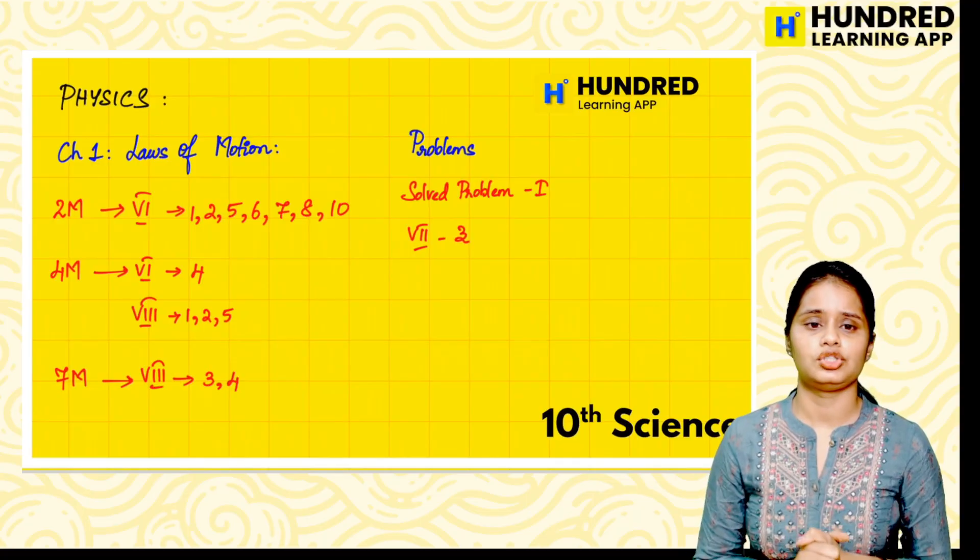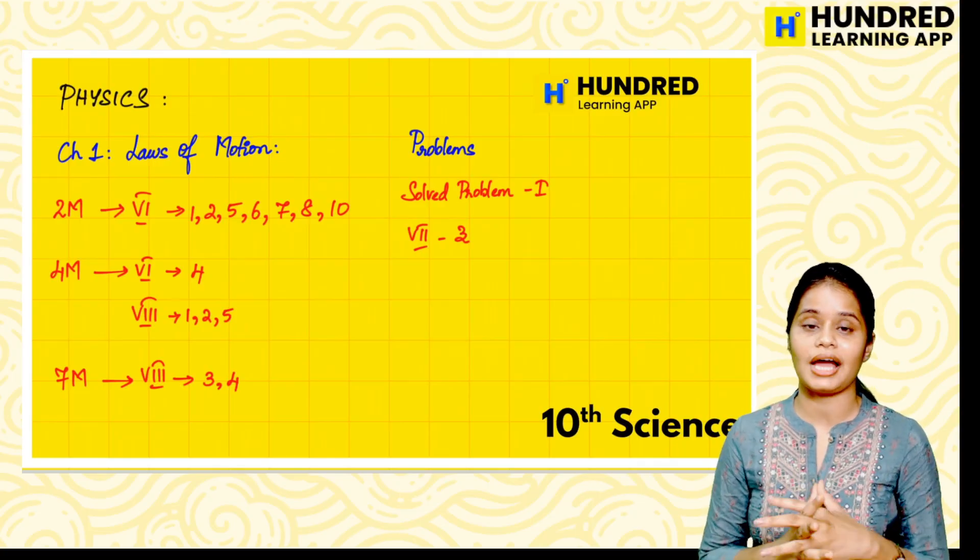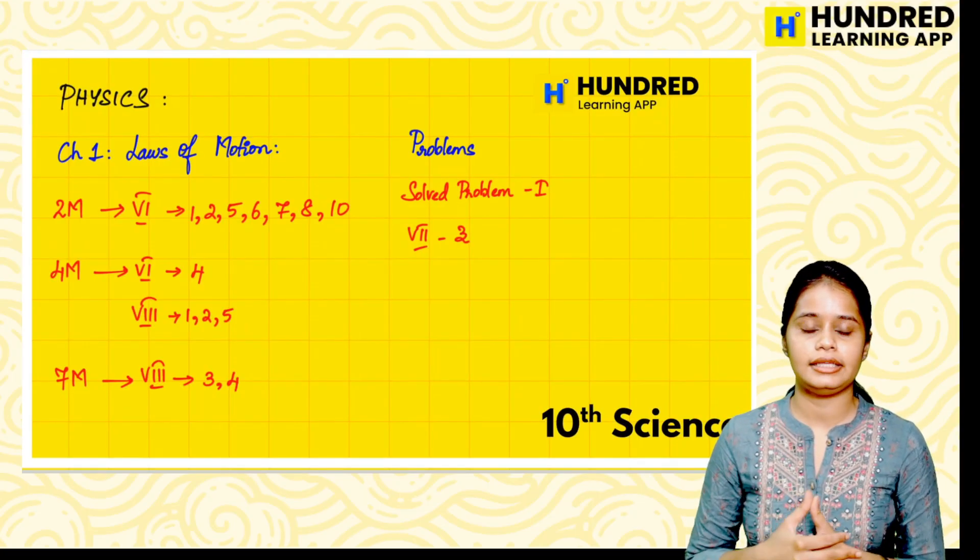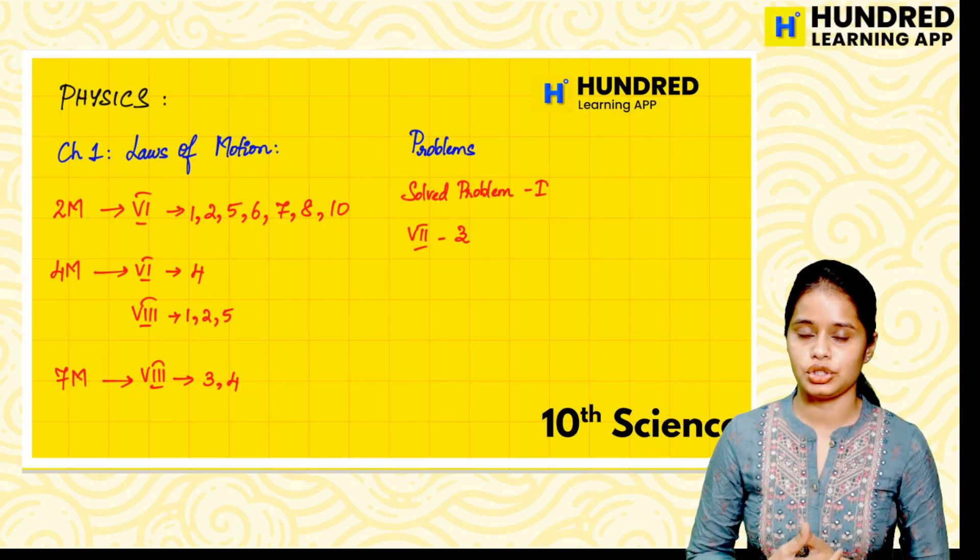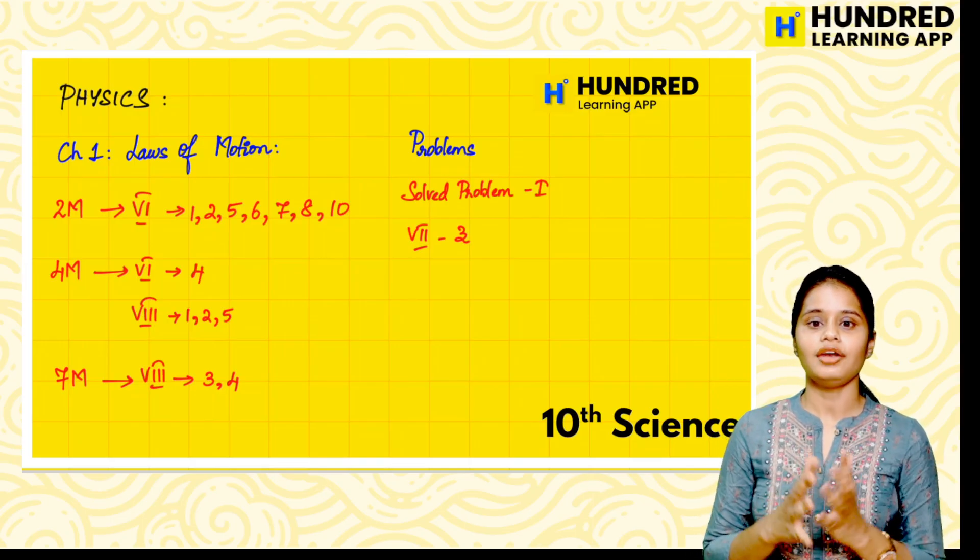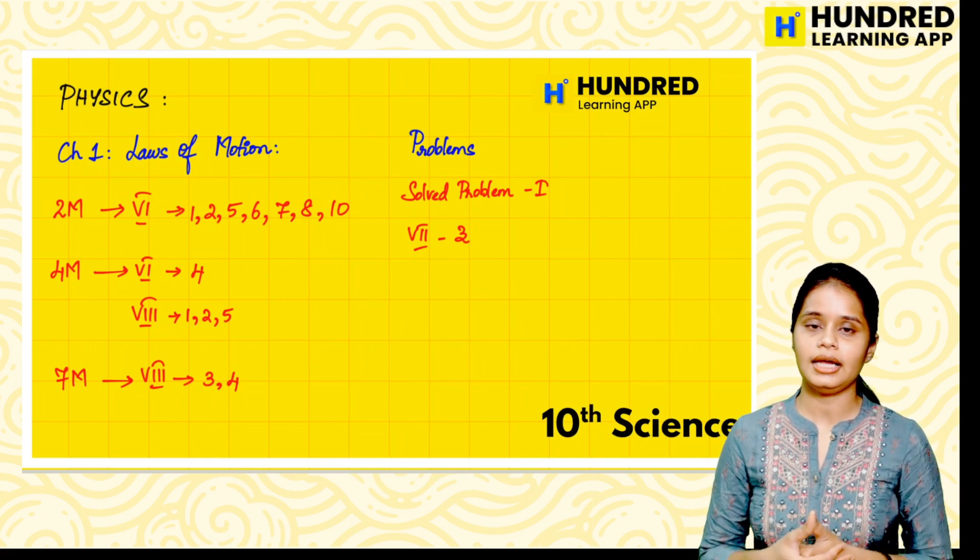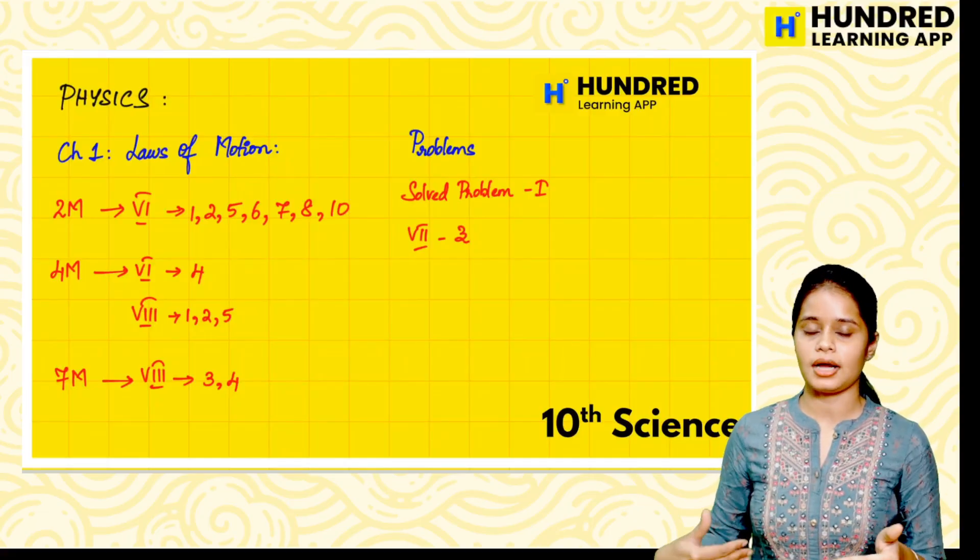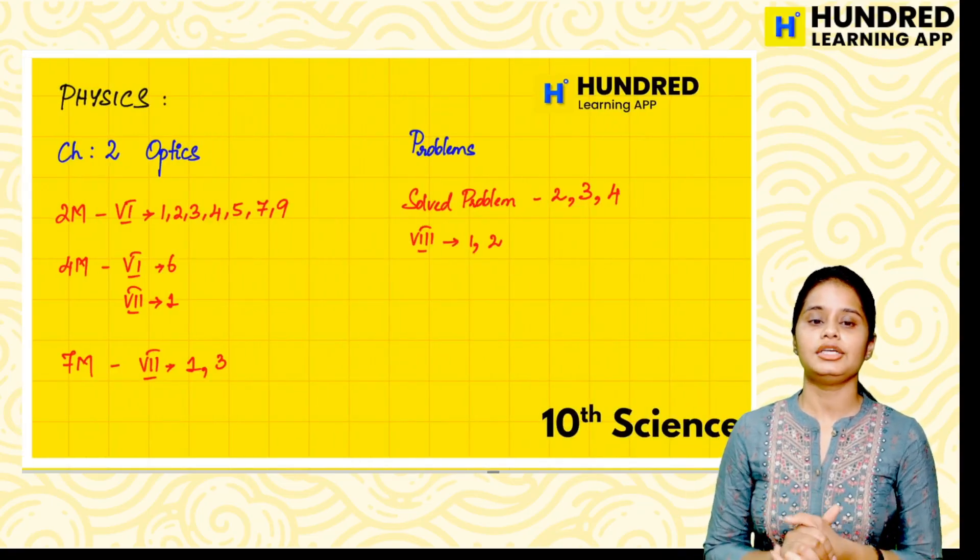First, in physics, Chapter 1 Laws of Motion. What questions are important? In the maximum laws of motion chapter, mass and weight. We will discuss Newton's law of motion in detail and solve the problems. Roman number 1 and in the 7th Roman, 3rd question. These are important problems. 2 mark, 4 mark, 7 mark - we will discuss it easier.